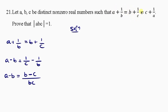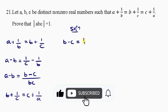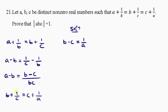Now let's equate the second expression to the third one. So B plus 1 over C equals C plus 1 over A. We move C to the left so it becomes minus C, and move plus 1 over C to the right so it becomes minus 1 over C. So B minus C equals 1 over A minus 1 over C.